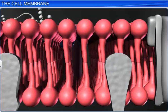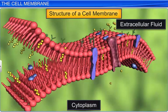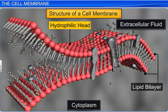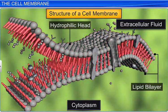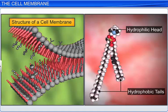Before the advent of the electron microscope, scientists conducted chemical studies on the cell membrane and deduced that it is composed of lipids that mainly consist of phosphoglycerides. These lipids are arranged in a bilayer with a polar hydrophilic head of both layers pointing outward towards the aqueous environment, and the non-polar hydrophobic tail made of saturated hydrocarbons pointing inward.